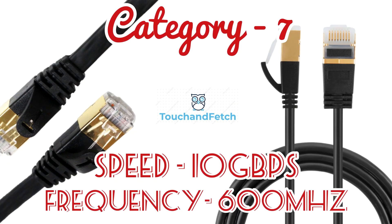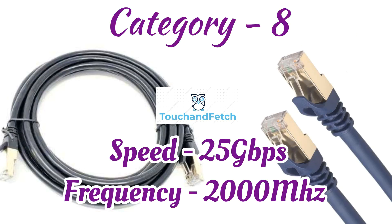The next one is Cat7. Cat7 is called Category 7 cable. Speed: 10 Gbps, frequency: 600 MHz. This cable is noise resistant and mainly used in industries and medical facilities. Its main advantage is increased security.